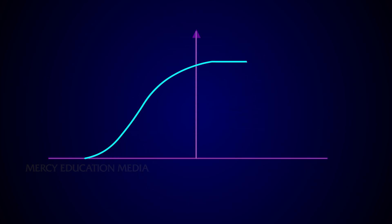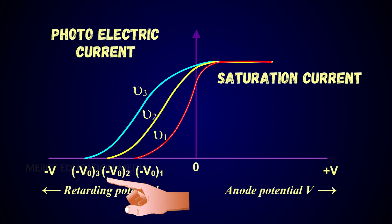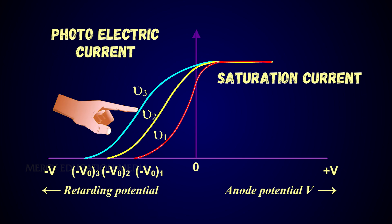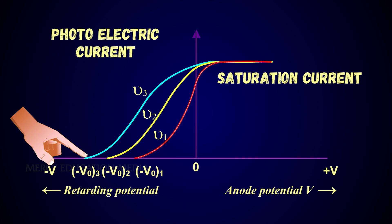The figure shows the variation of the photoelectric current with the applied potential difference V for three different frequencies. From the graph, it is found that higher the frequency of incident radiation, higher is the value of stopping potential V0.